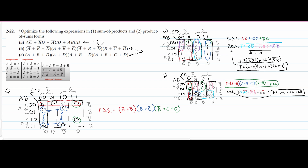Now we are going to solve for the sum of products — S.O.P. To solve for sum of products, we're going to plug in our 1s. So we have a 1 here, 1 here, 1 here, 1 here, and lastly a 1 here. I also forgot a 1 here, so we should have a 1 right here as well. Now we have finally gotten all of our 1s. We partner this one with that one, and this one with that one. We can't use the A's because they're broken up. We can use the B's, so we'll have our B in here.